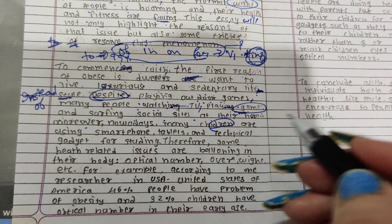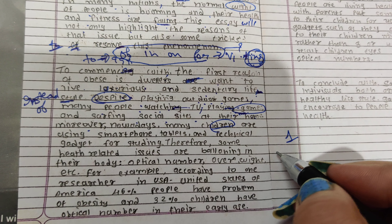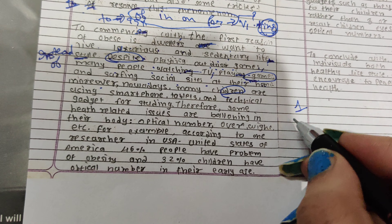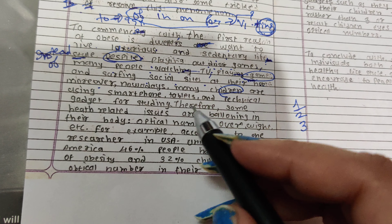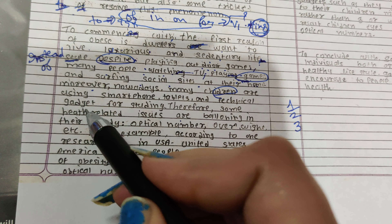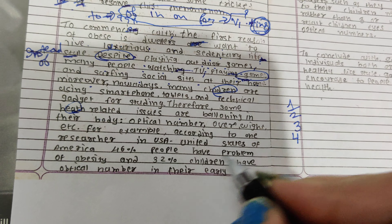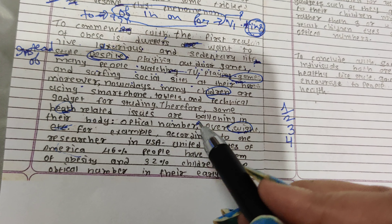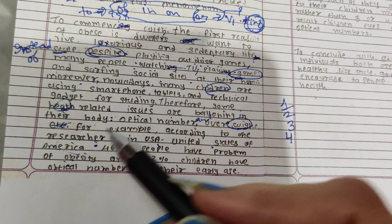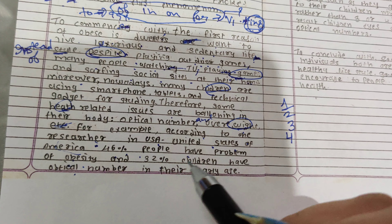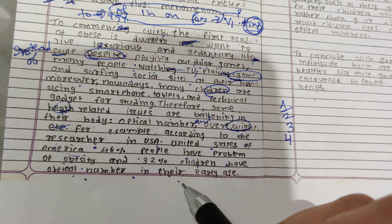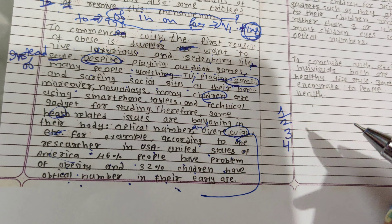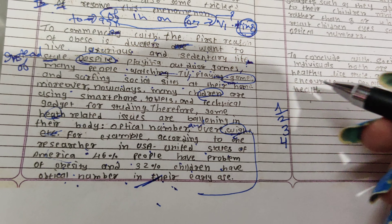Okay, checking errors now: 'children' spelling is wrong, 'weight' is wrong, 'luxurious' spelling is wrong, 'children' wrong again, 'health' wrong, 'overweight' wrong — do not write it that way. For example, according to one researcher, in the USA — United States of America — 46% of people have a problem of obesity and 32% of children have optical number issues in their early age. But who is wrong? You need to justify your reasons.